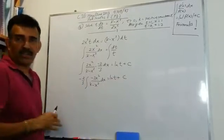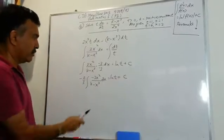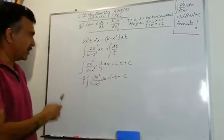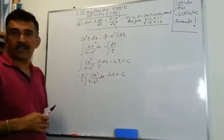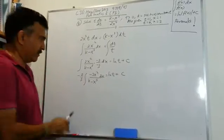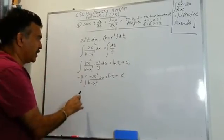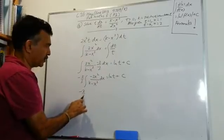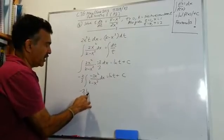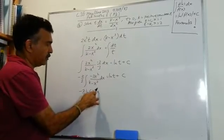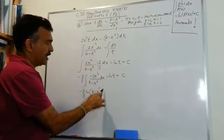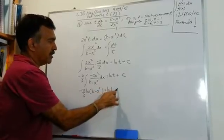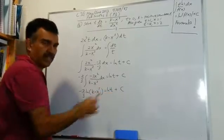Now we can do the integration on the left hand side, because when you differentiate the denominator you will get -3x², and we are ready to go. So we can write: -2/3 · ln|k - x³| = ln t + c.